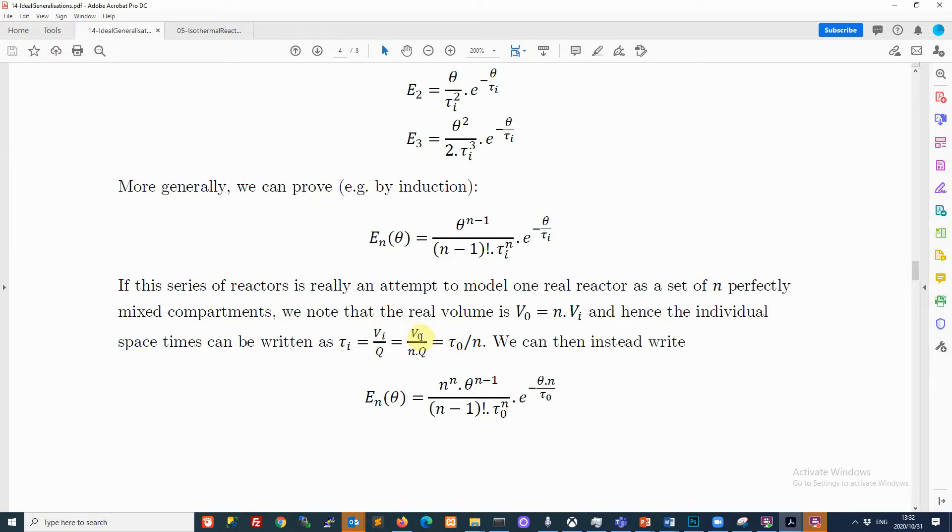We could rewrite this. If we look at this you can see here it's V_0 over Q, so V_0 over Q is tau_0. So it's tau_0 over n. Tau i equals tau_0 over n. If you substitute, instead of using tau i here you can write tau_0 over n. In other words you could rewrite this as n to the power n and then the rest is the same. We can rewrite our RTD for the nth partition. We can write the space time of any of those partitions in terms of the overall space time divided by the number of partition zones. That means that as we increase n we are making the volume smaller and smaller. As n goes off to infinity, V goes to zero. In other words we are getting closer and closer to a perfect plug.